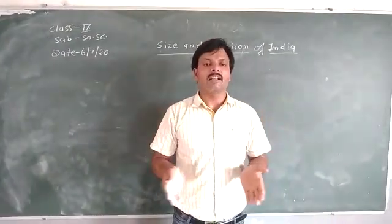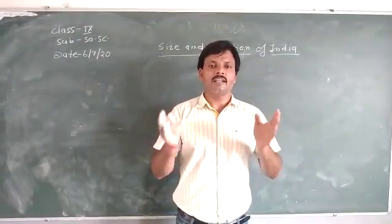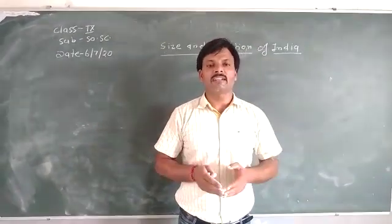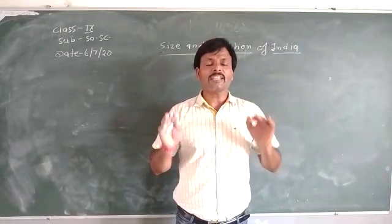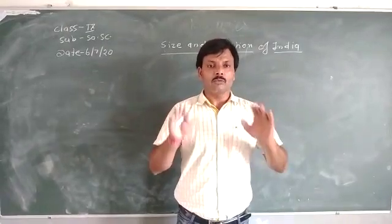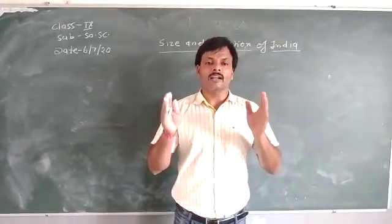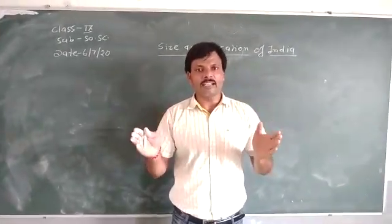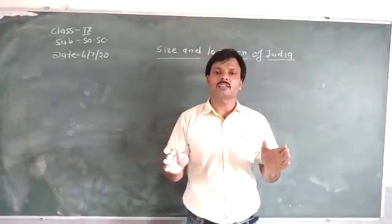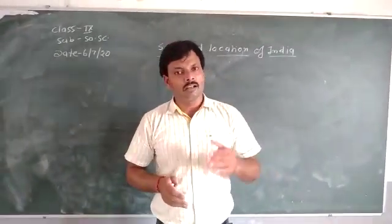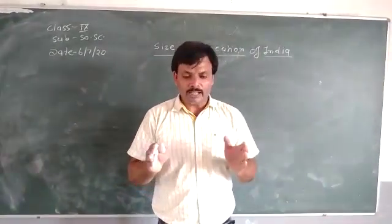The total number of longitudes are 360 and the total number of latitudes are 180. So thus we can say that vertical lines on the globe are called longitudes and horizontal lines on the globe are called latitudes.